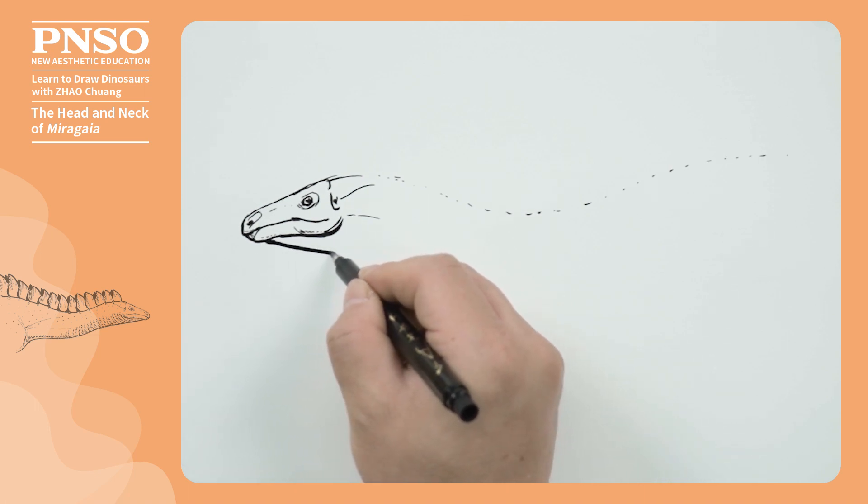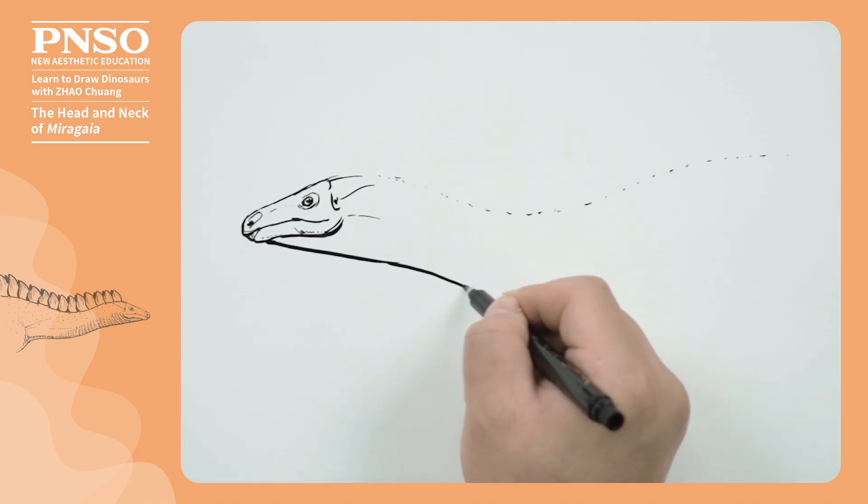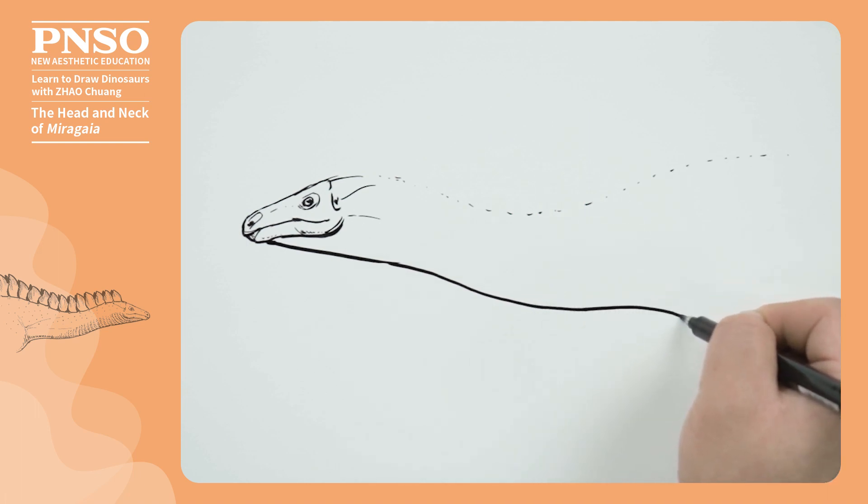We can make the lower jaw a little smoother. The muscles on the shoulders and neck can be expressed with lighter lines.